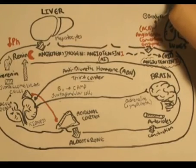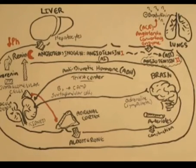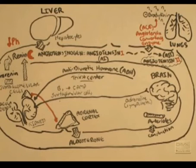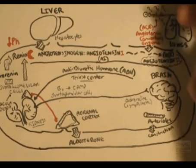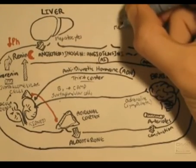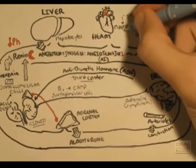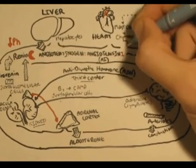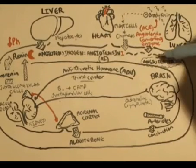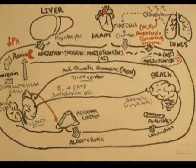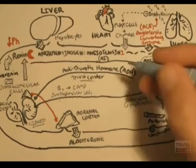ACE also inhibits the activity of bradykinin, which is a vasodilator that lowers blood pressure. People who suffer from high blood pressure take ACE inhibitors, which not only prevent angiotensin 2 from being made, but also allow bradykinin to function normally as a vasodilator, lowering blood pressure. Scientists have also found that bradykinin binds to mast cells in the heart, which then secretes kinase. Kinase is an enzyme which can also convert angiotensin 1 to angiotensin 2, so there are two enzymes — ACE and kinase — that can perform this conversion.